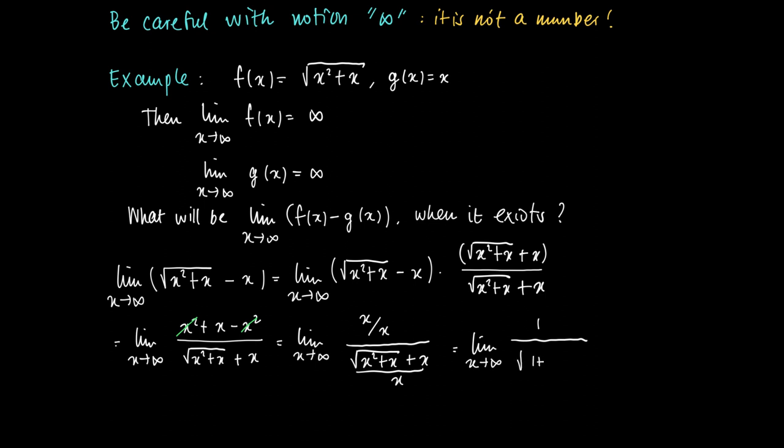So we get 1 over the square root of 1 plus 1 divided by x plus 1. And this clearly has a limit of a half since 1 over x goes to 0, and we will have 2 in the denominator and 1 in the numerator. So this gives us a reason to believe that this equals a half.